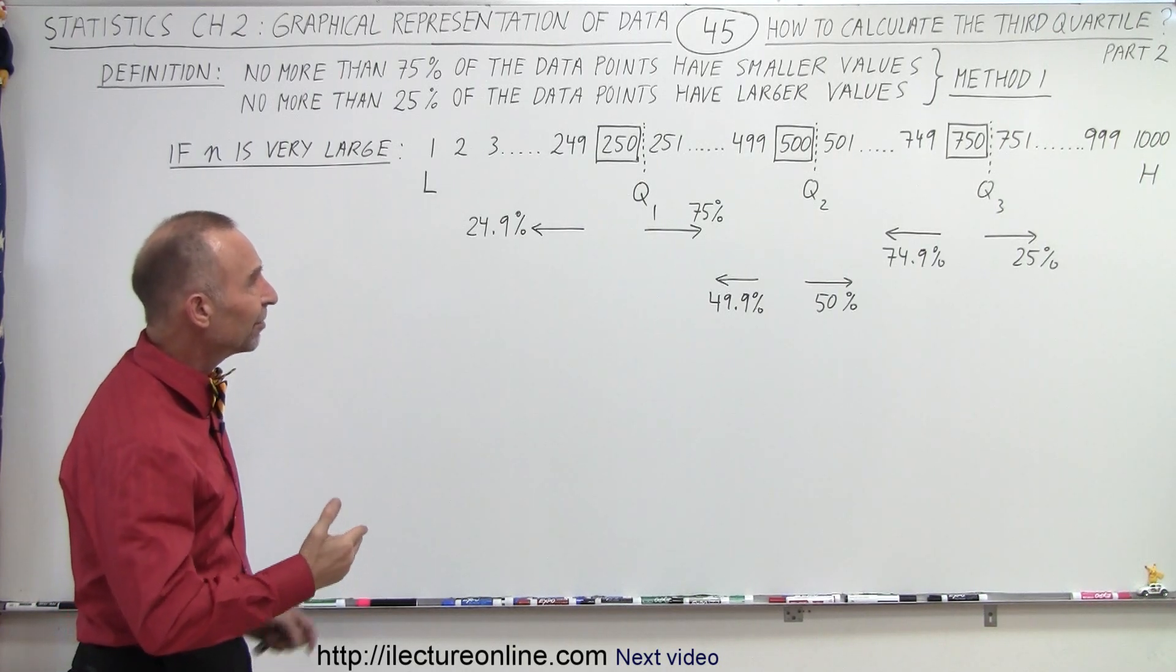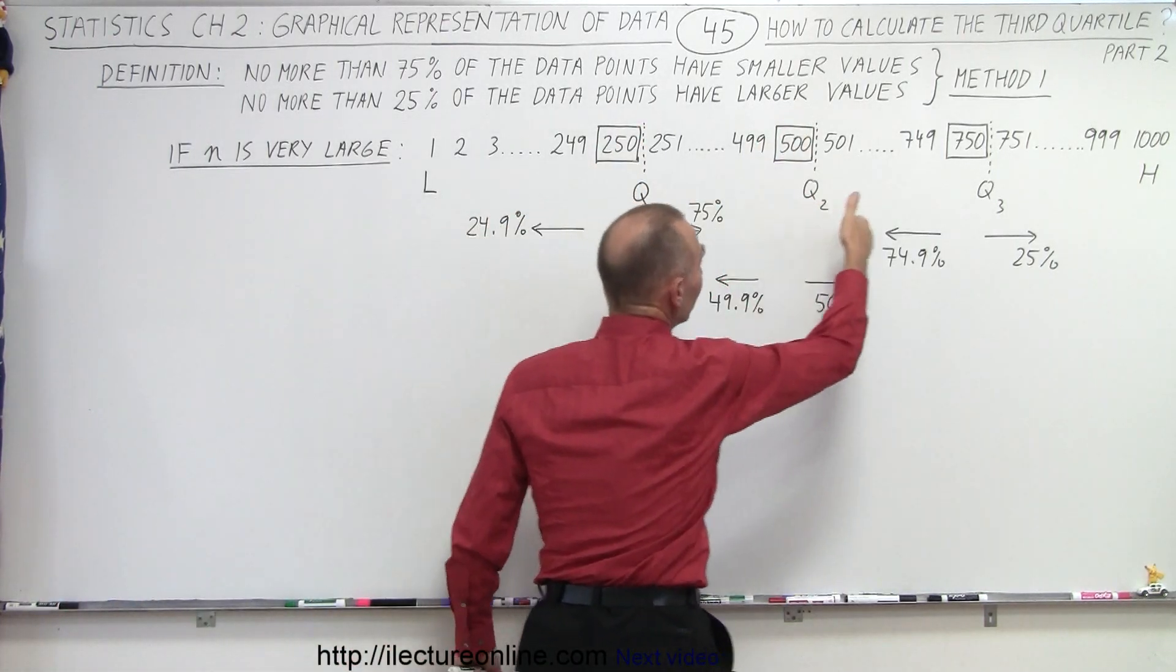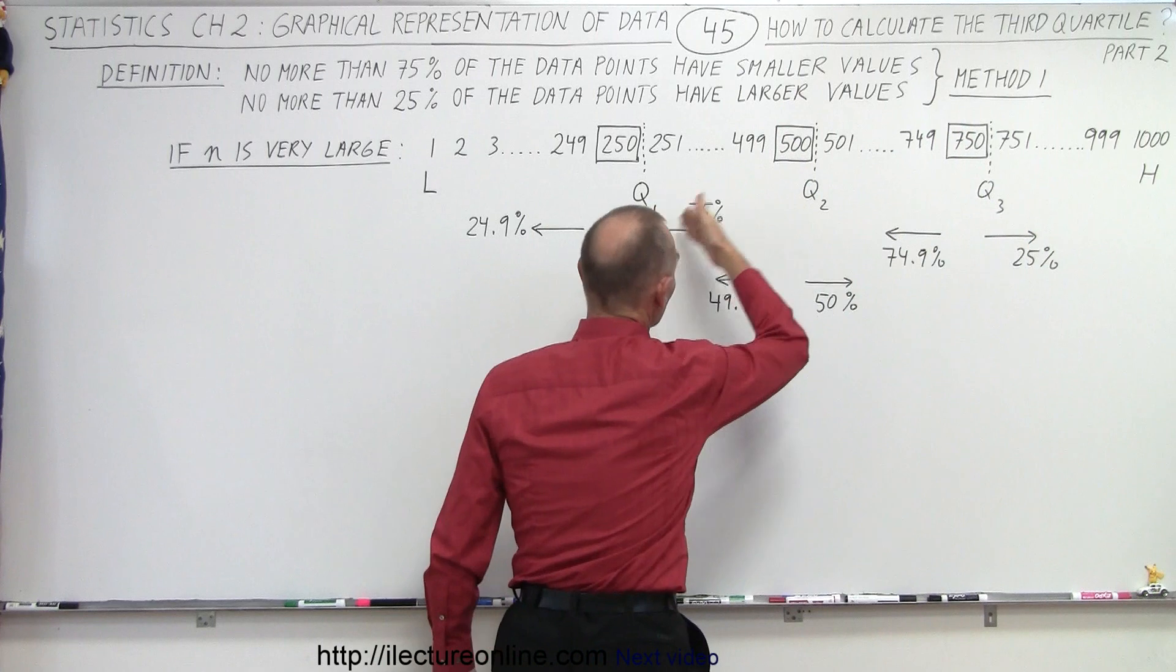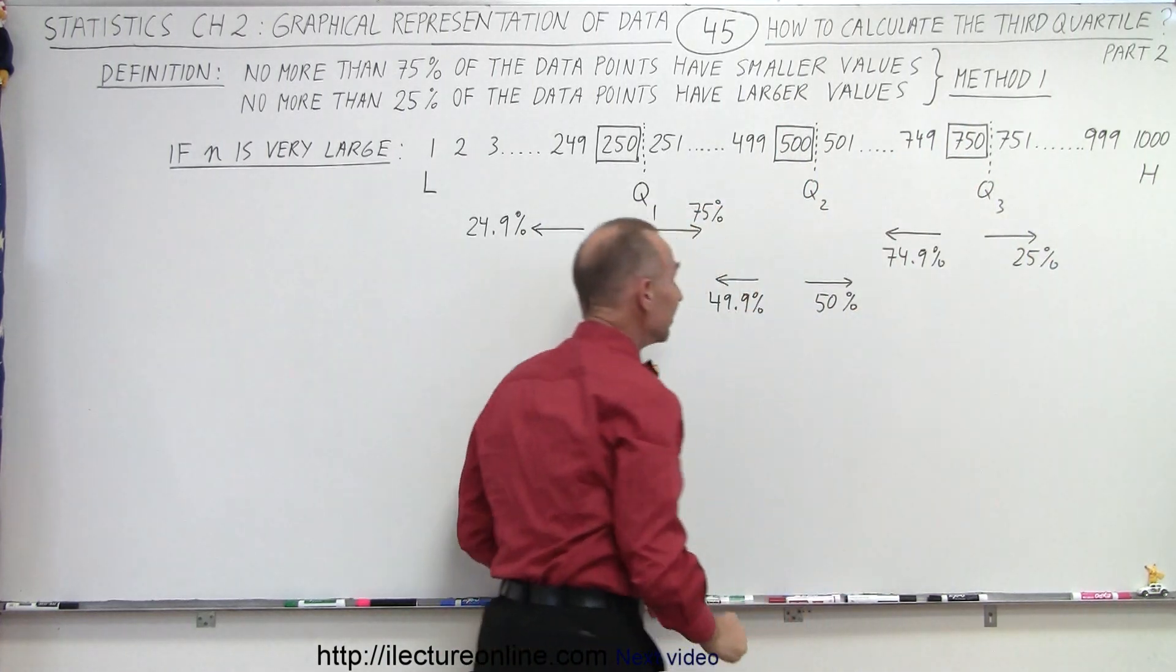Notice that since there's an even number of data points, we have very nice lines that represent the first quartile, the second quartile, the third quartile, and then of course we have the high and the low at either end.